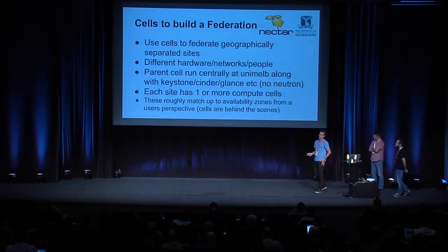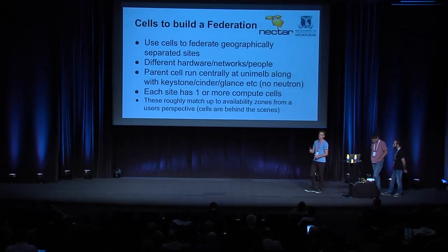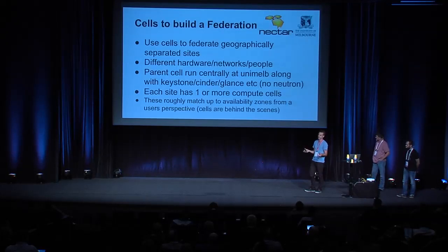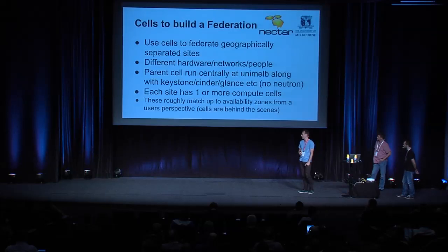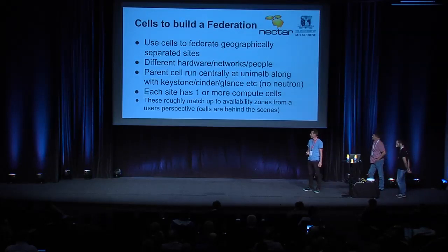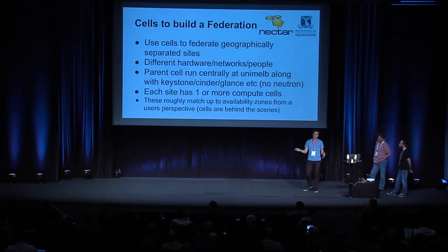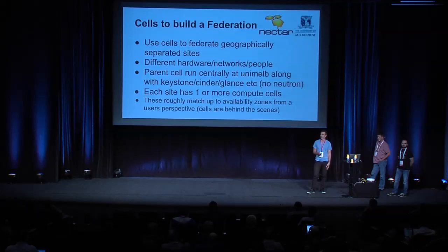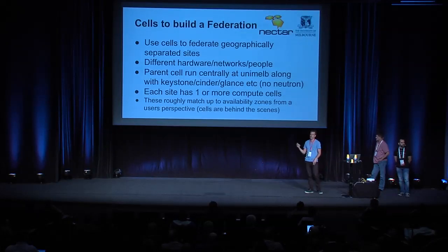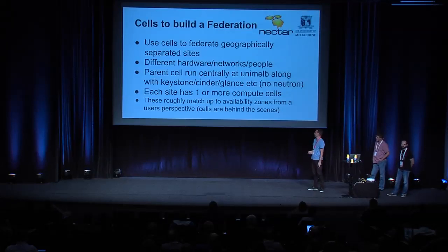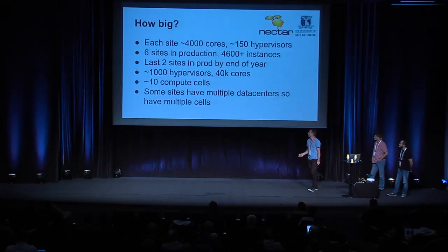Each site tends to run one cell, but some of them have multiple data centers. So we've got almost like a three-tier hierarchy where some sites will have two data centers, two cells. With cells, we treat them as a behind-the-scenes operational deployment mechanism. In terms of what a user sees, they see availability zones. These roughly match up to cells, but they don't necessarily have to.